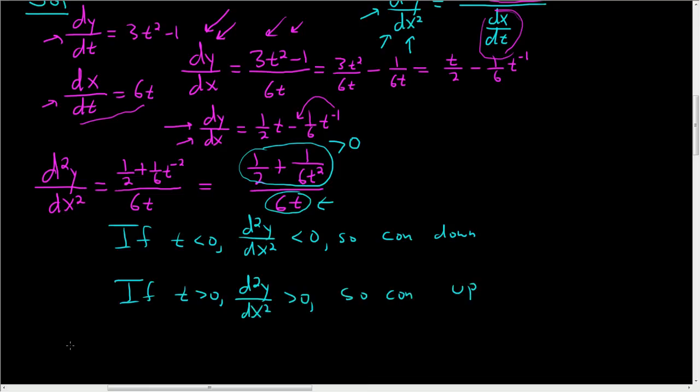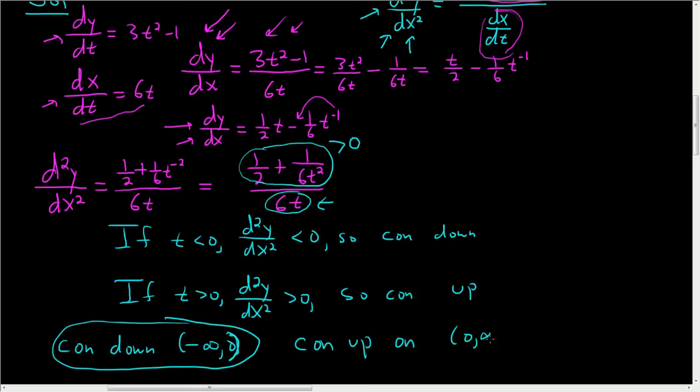So the final answer will be concave down on negative infinity to 0. So that's one answer. It's a parenthesis. And concave up on 0 to infinity. And that's it. I hope this helps.